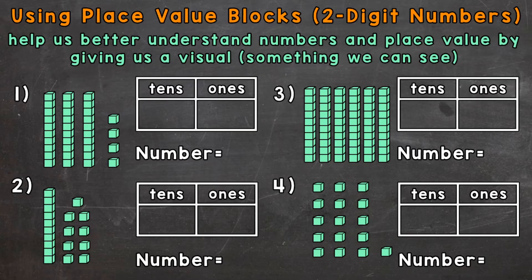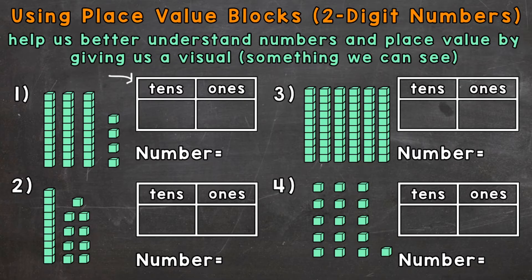We're going to go through four examples together in order to get this down. In example one, we have some blocks off to the left. We have a place value chart where we're going to show exactly what those blocks represent. And then where it says number, we're going to write the number in standard form, which is just a fancy way of saying write the number how you normally write numbers.